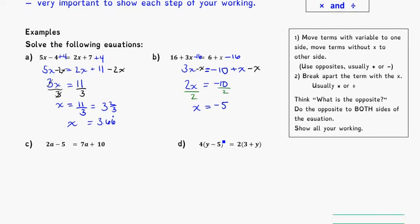It might be a good idea for you to pause and try to solve these ones on your own to test your knowledge. Next equation: 2a minus 5 is equal to 7a plus 10. I'm going to think about moving things from one side to the other — getting all the a's on one side and all the numbers on the other side.